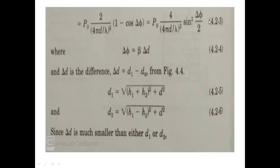Here Δφ is the phase difference between the direct wave and reflected wave. In terms of beta, the phase difference can be written as Δφ = β · ΔD, where ΔD is the path length difference. Path difference means the difference in distance between the reflected wave path and the direct wave path, so ΔD = D1 - D2.